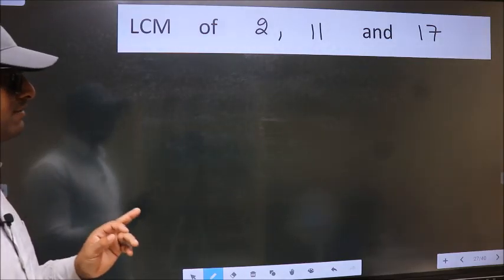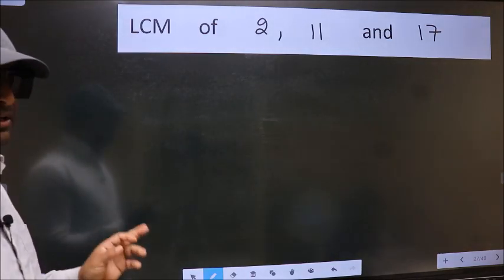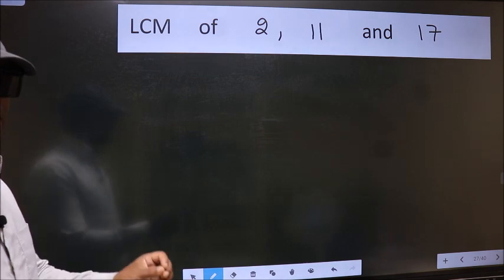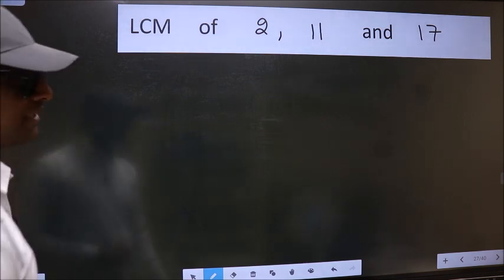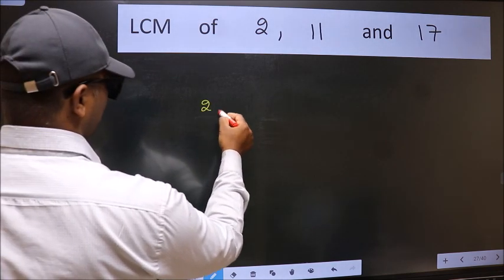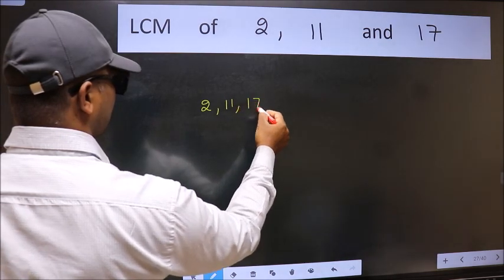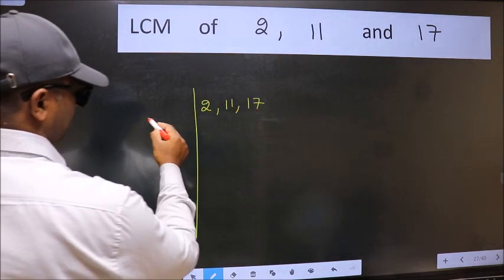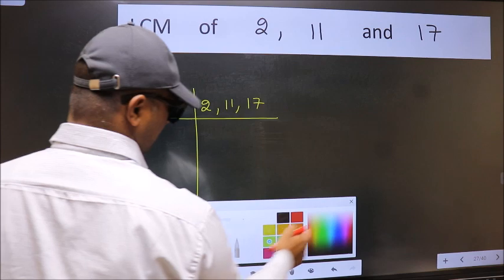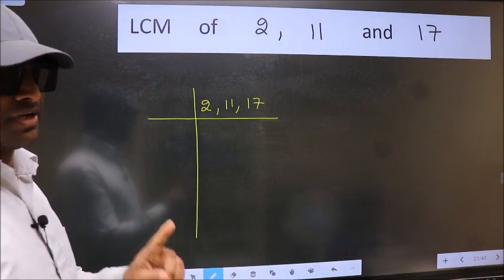LCM of 2, 11 and 17. To find this LCM, we should frame it in this way: 2, 11, 17. This is your step 1.